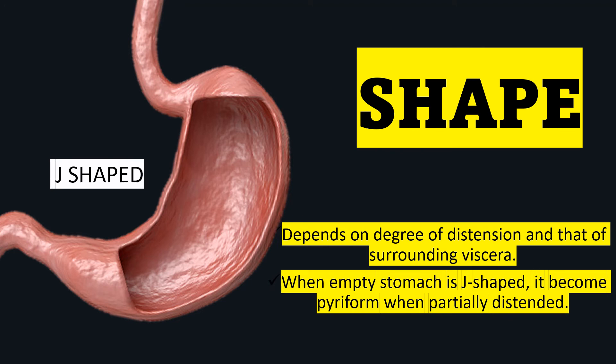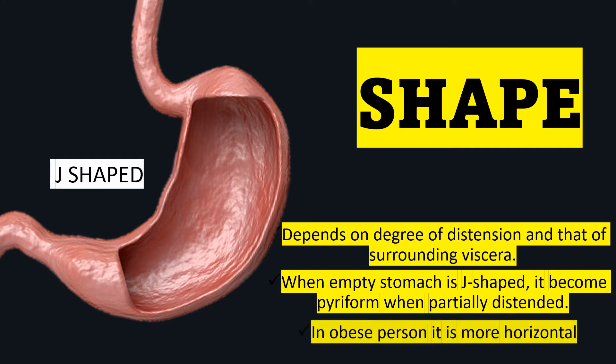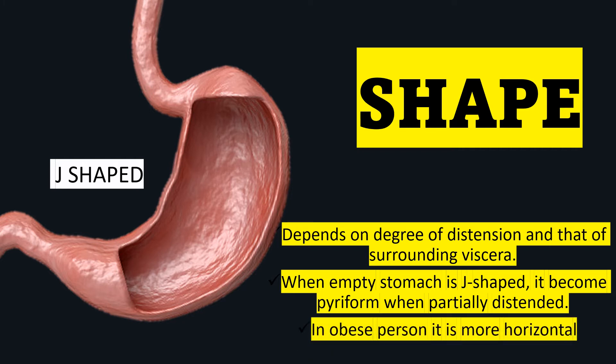It becomes pyriform when partially distended. In an obese person the stomach is more horizontal, whereas it is vertical when in the empty J-shape.